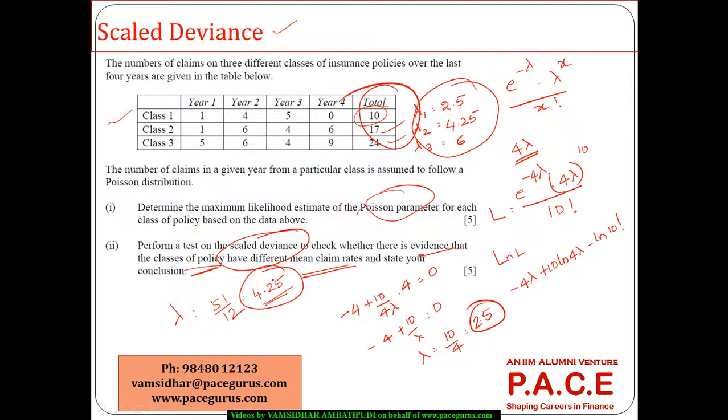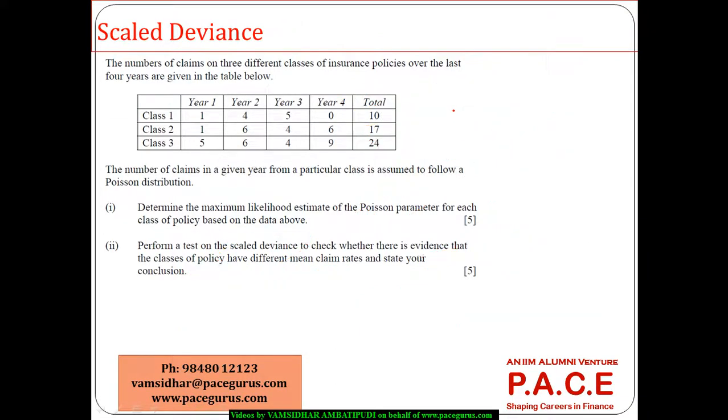Now what is the scaled deviance test? The scaled deviance test is actually telling me to look at the comparison of the log likelihood functions, comparison of the log likelihood function with the classification versus without the classification. So with the classification I am seeing that there are three parameters, and without the classification there is only one parameter. So which means the scaled deviance actually will follow a chi-square distribution with three minus one, two degrees of freedom.